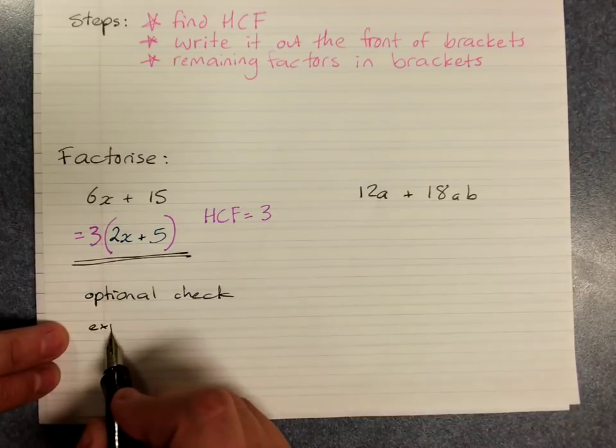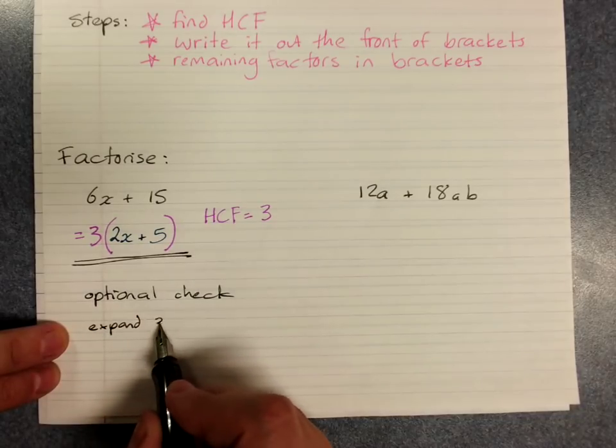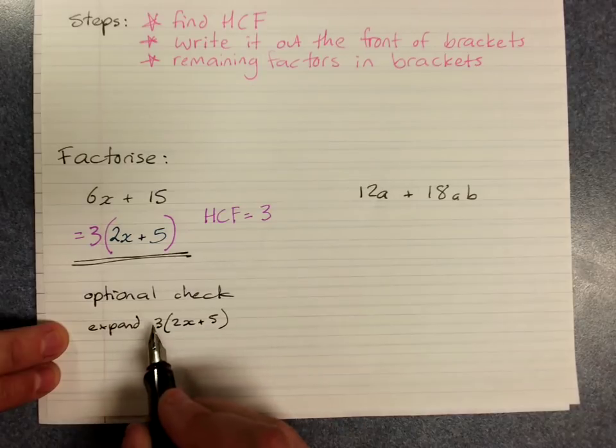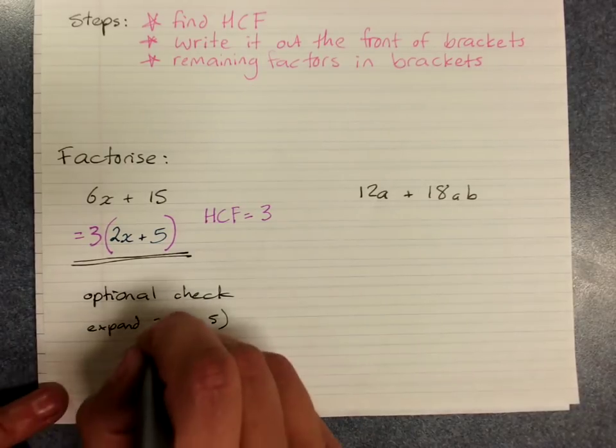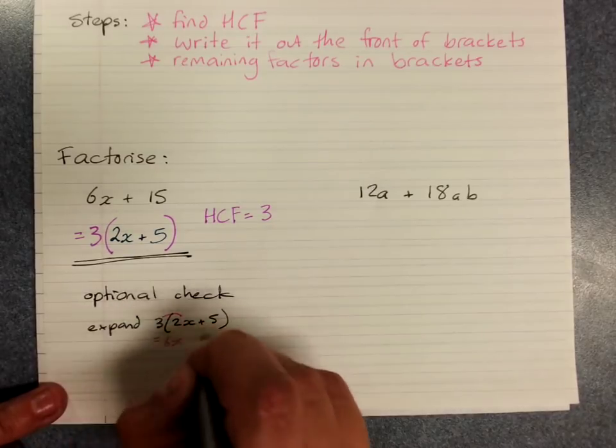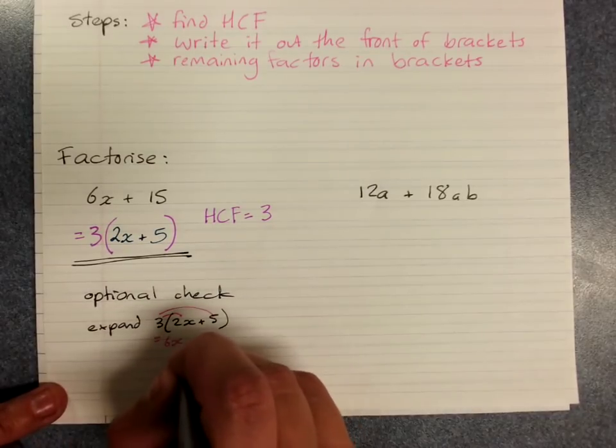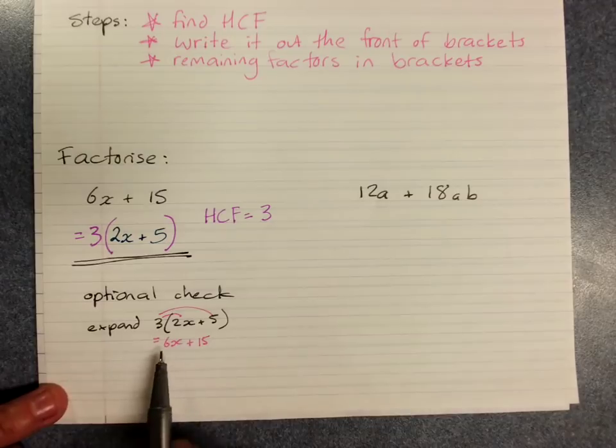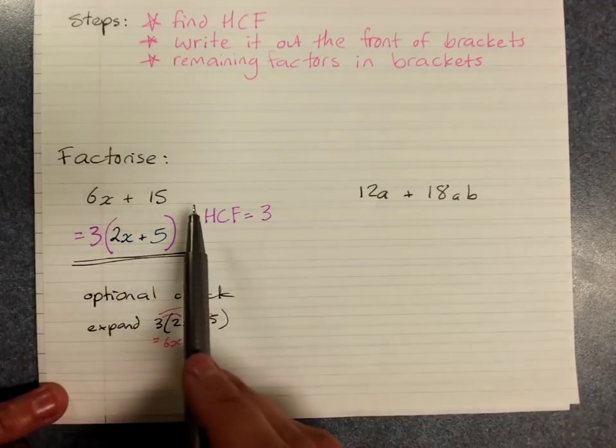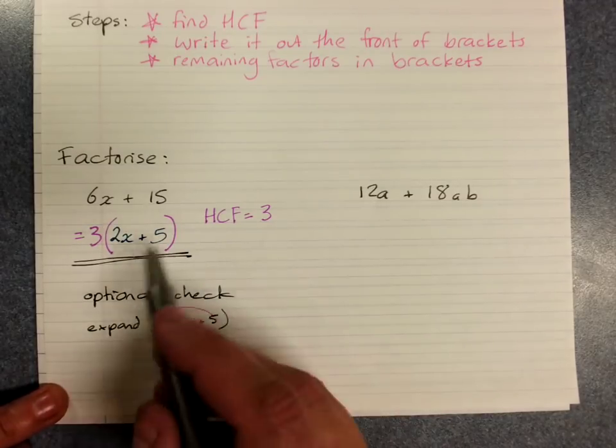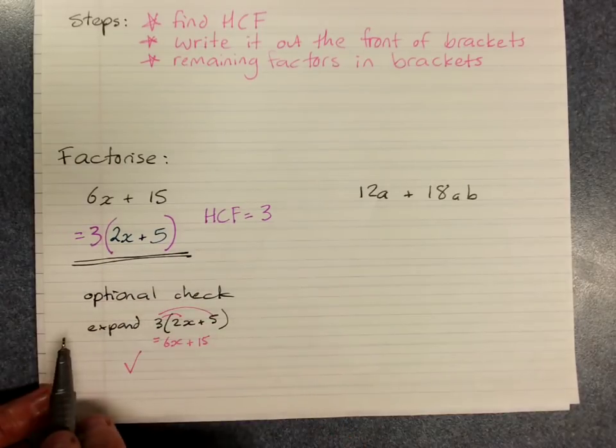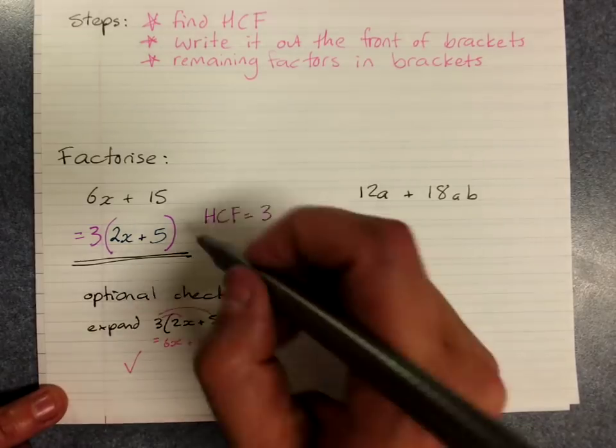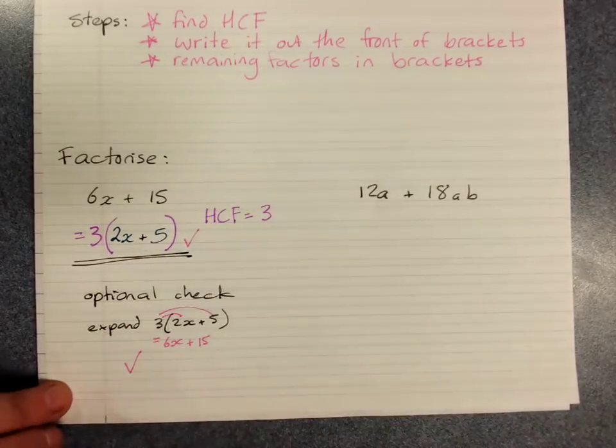So expand what you just got. 3 times 2x is 6x. 3 times 5 is 15. And that's a positive answer. I got the same as I'd started with. So that says I factorized correctly. If you can expand back and get the same answer, you know your factorization is correct.